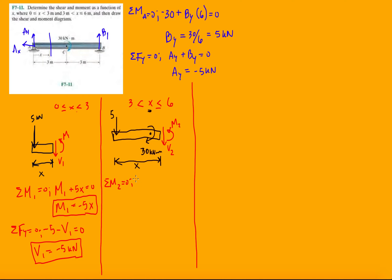So let's do this. Moment about point 2. Let's see what contributes to this moment. Well, we have M2, negative 30, and then positive 5x equals zero. So then M2 is 30 minus 5x.